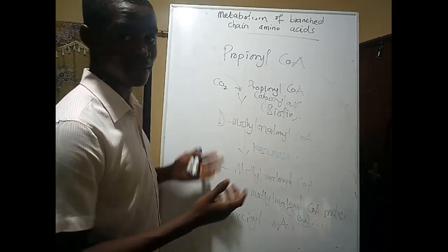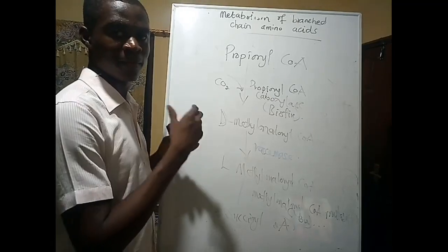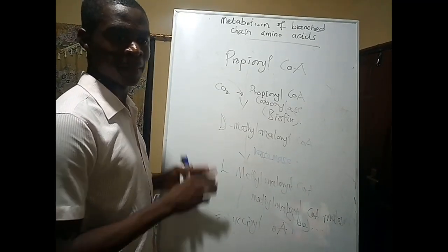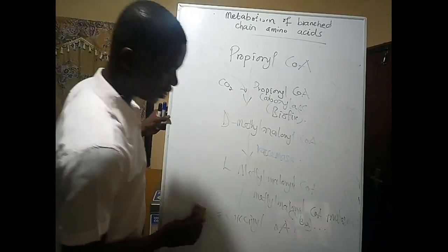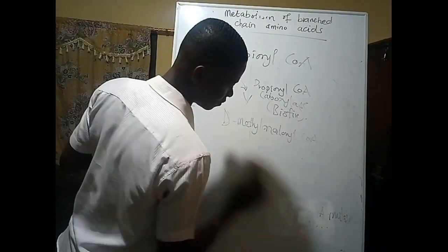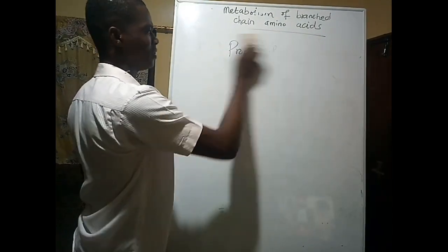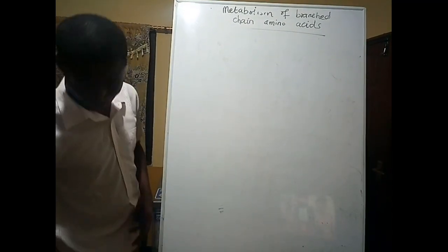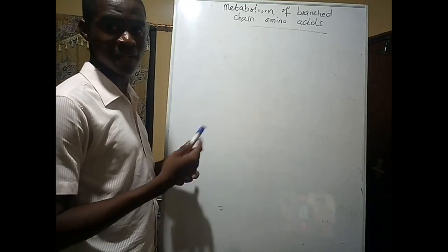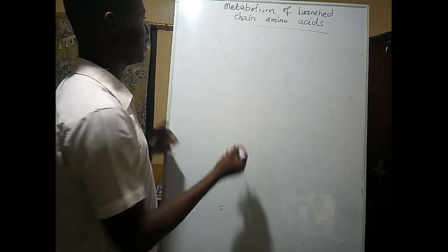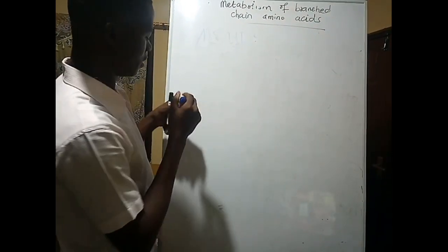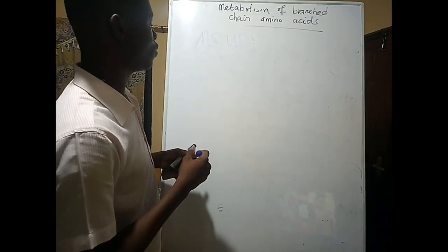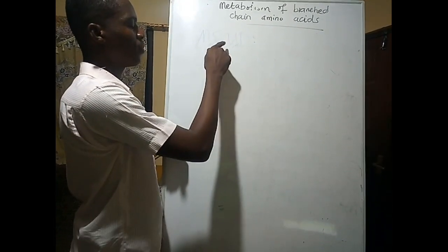We are now done with the metabolism of the branching amino acids. The next thing to look at is the clinical correlations — medical conditions that can arise from improper metabolism of these amino acids. The first one is MSUD, which stands for Maple Syrup Urine Disease.